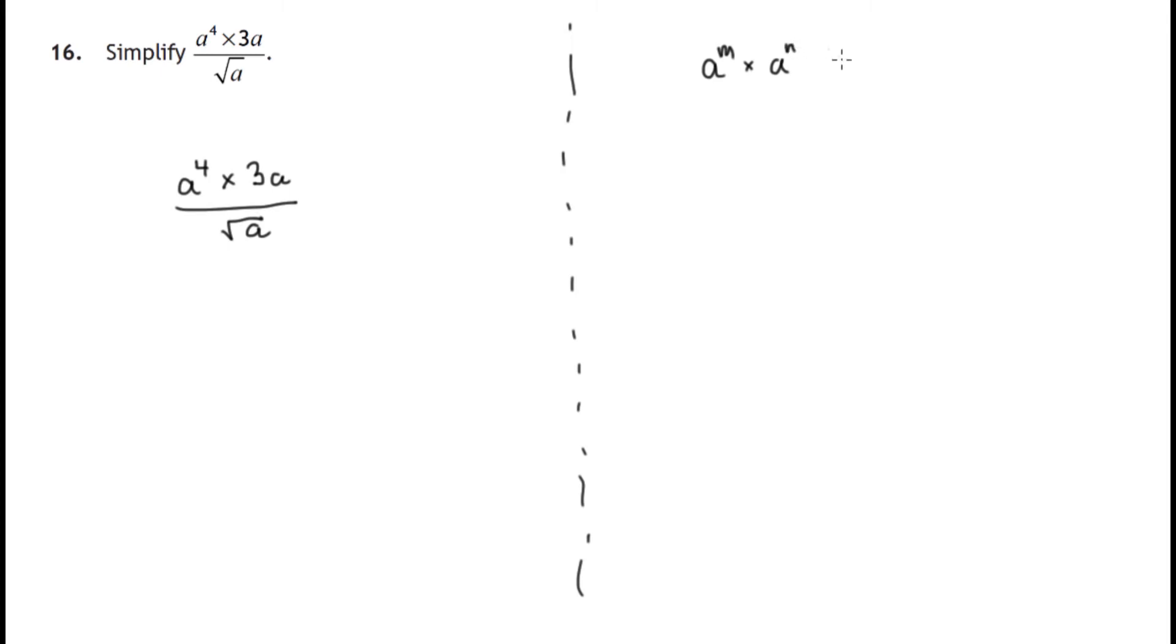Two well-known ones: if you're multiplying two powers of a number, add their indices. Likewise, if we're dividing two powers of a number, we subtract their indices.